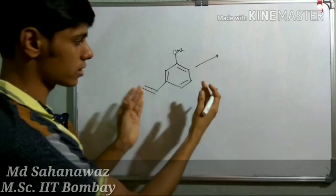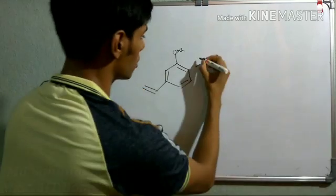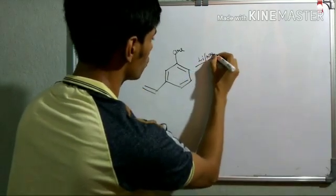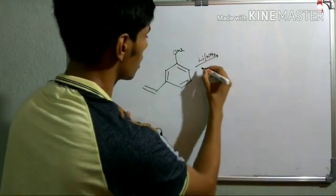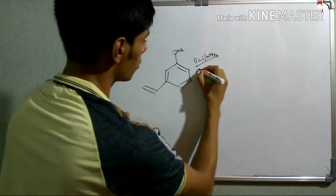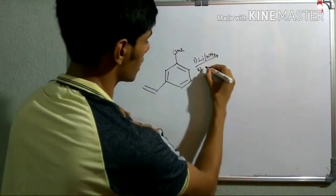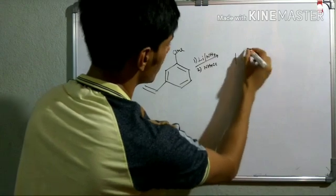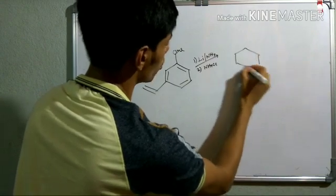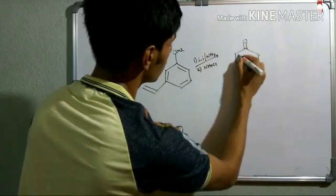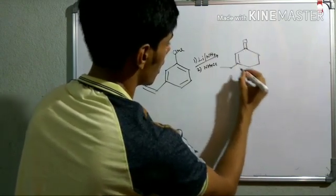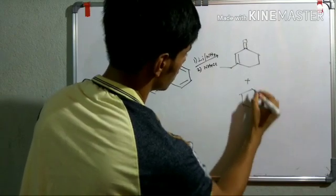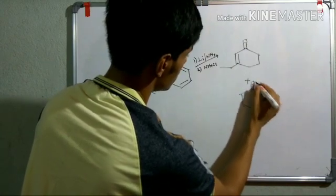This is basically the portion involved in the reaction, and when you did a Birch reduction with it, the first step is lithium in liquid ammonia, and in the second step NH4Cl. You are getting two products — this one and another one.